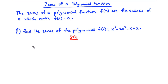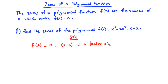From the factor theorem, if f(a) = 0, then x minus a is a factor of f(x). So we are going to substitute values of x into this polynomial to see if f(x) equals 0. If f(x) = 0, it means x minus that value is a factor, and we can then use long division to find the other factors.